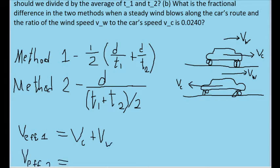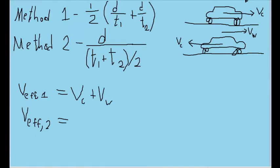And in the bottom case, we're going to write that as v_c minus v_w, since the speed of the wind is fighting back against the speed of the car.